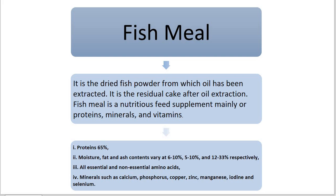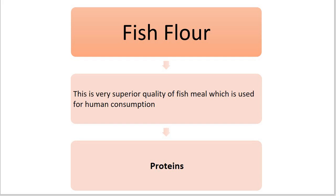The next by-product is fish flour, also known as hydrolyzed protein. It is a superior quality of fish meal used for human consumption. Its raw material includes the part of fish left after oil extraction in fishes such as mackerel, salmon, oil sardine, shark, or ray fish. It is prepared on a commercial scale mostly by the solvent extraction process. Fish flour forms an ideal protein supplement to human diet and is produced in India, South Africa, and the USA.